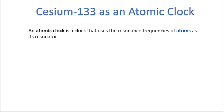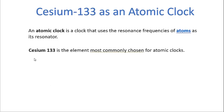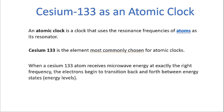For this, we're going to use the example of the cesium-133 atom as an atomic clock. An atomic clock is a clock that uses the resonant frequencies of atoms as a resonator. Cesium-133 is the element most commonly chosen for atomic clocks. When a cesium atom receives microwave energy at exactly the right frequency, the electrons begin to transition back and forth between energy states or energy levels. This is the emission and absorption cycle I was talking about.